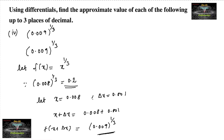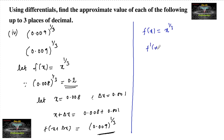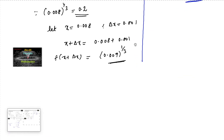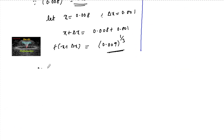Since f(x) = x^(1/3), let us differentiate. f'(x) = (1/3) x^(1/3 - 1) = (1/3) x^(-2/3). Now, using the differential approximation formula: f(x + δx) ≈ f(x) + f'(x) · δx.